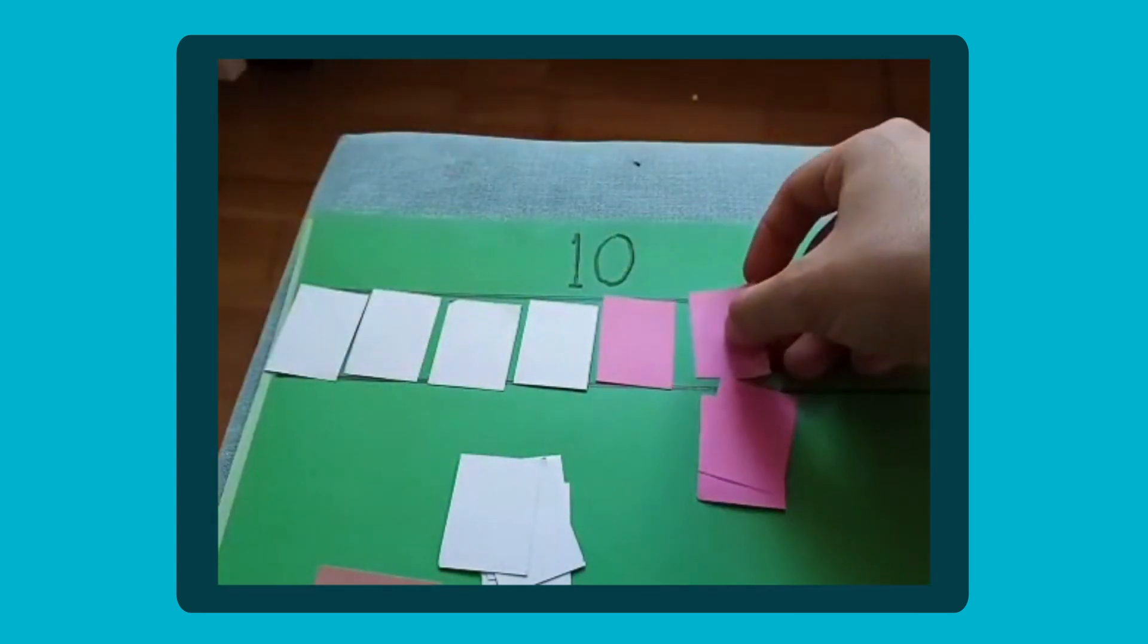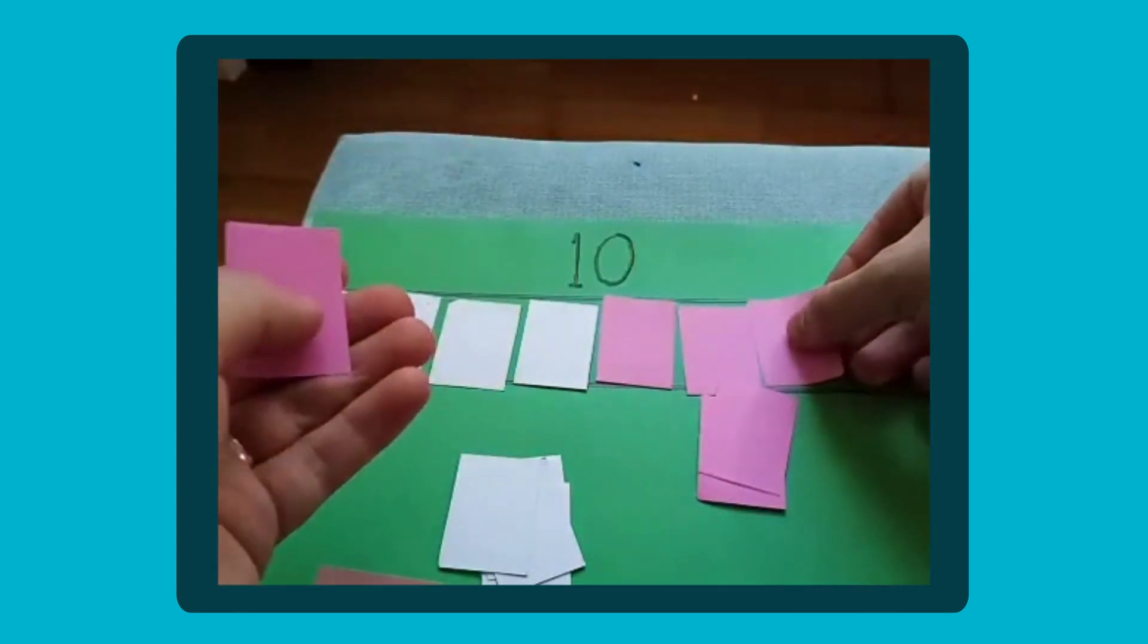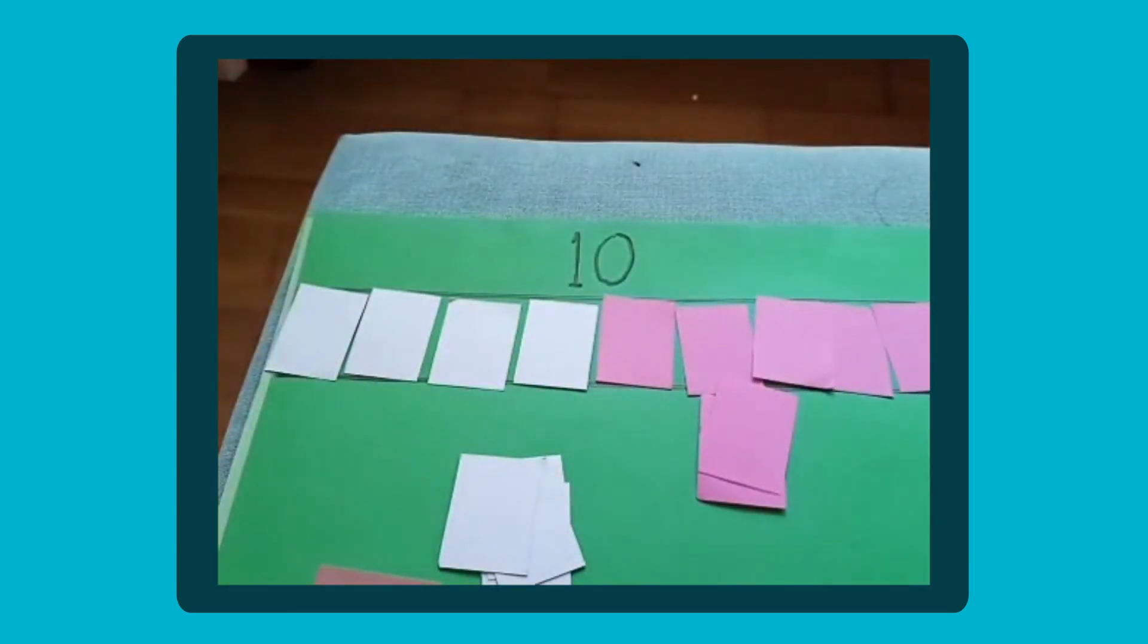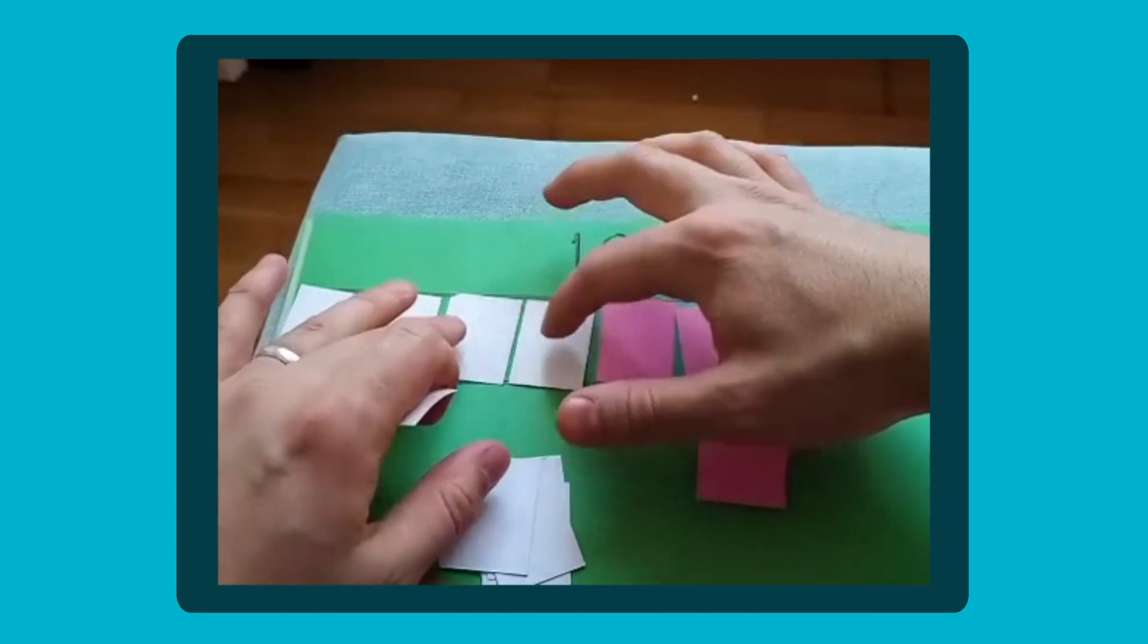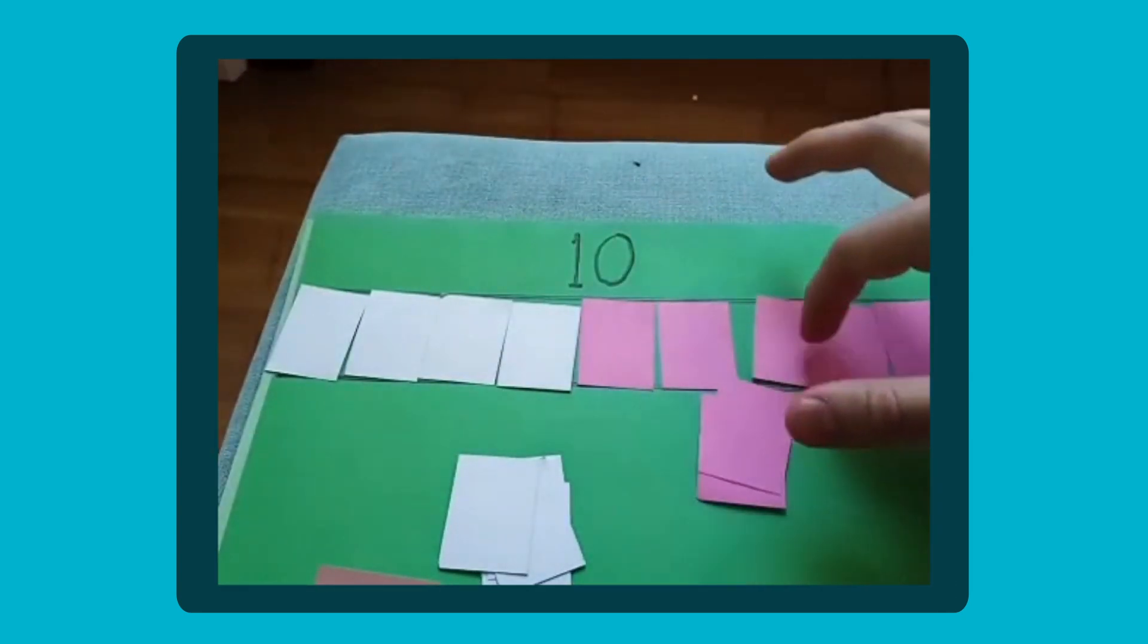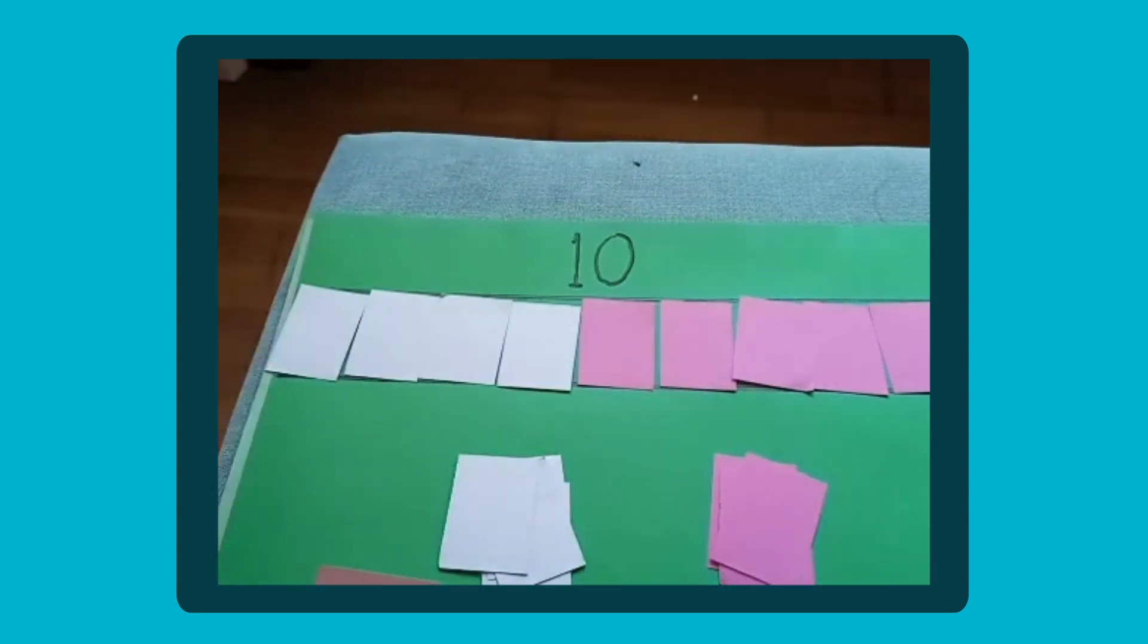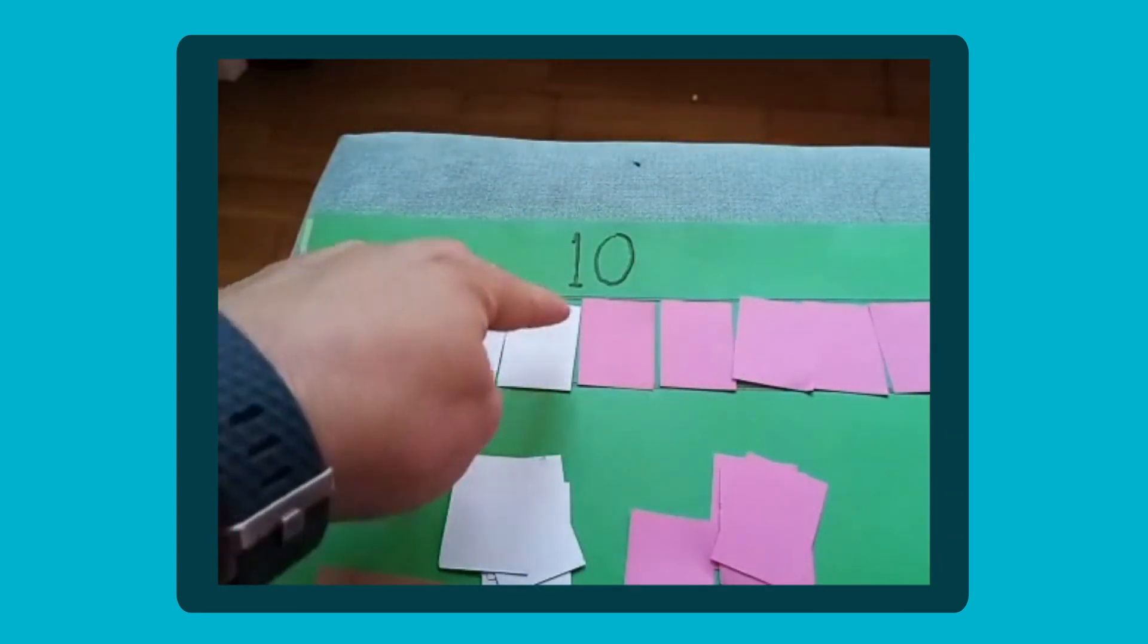So we've already got four, we need another one two three four five six. Obviously the bigger I leave these gaps the worse this is going to work. So you can kind of just see that our bar has 10 now across the bottom and 10 along the top which is four and six because four add six equals 10.